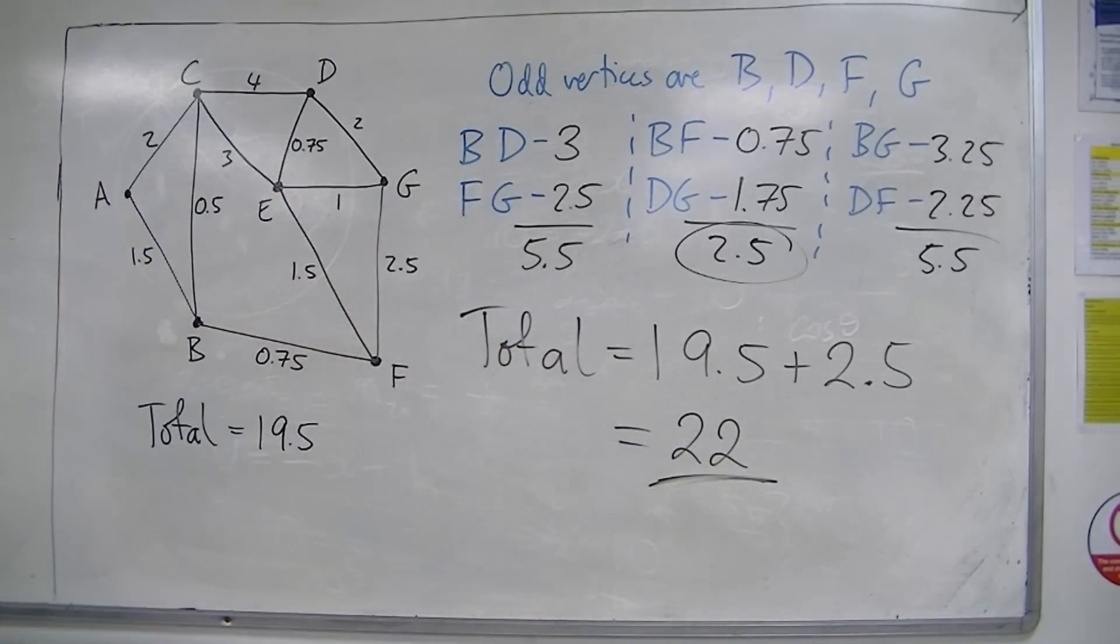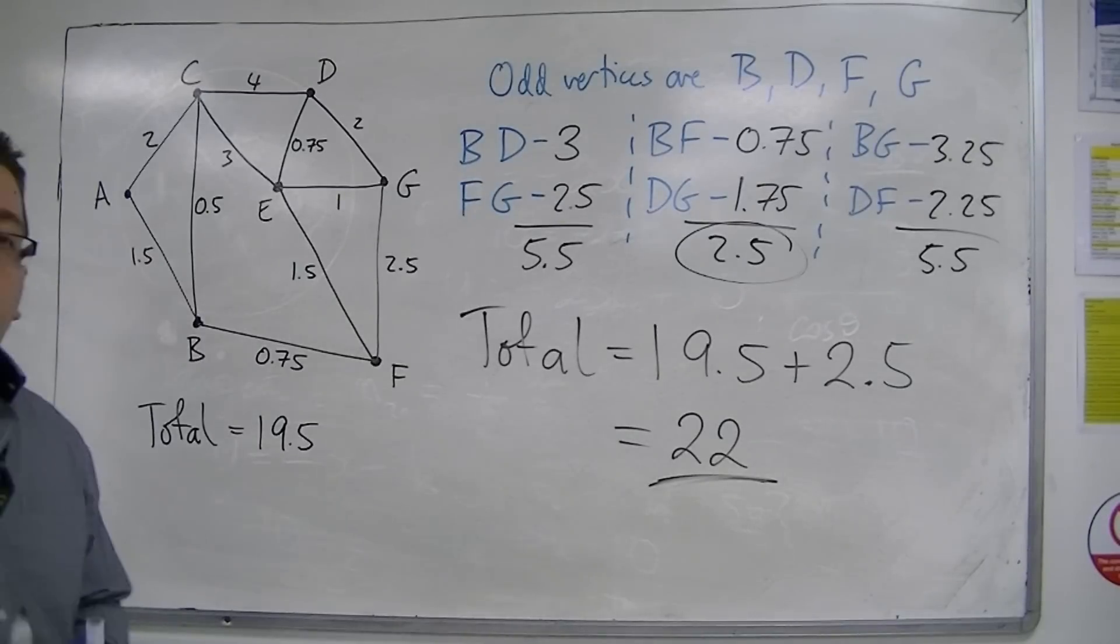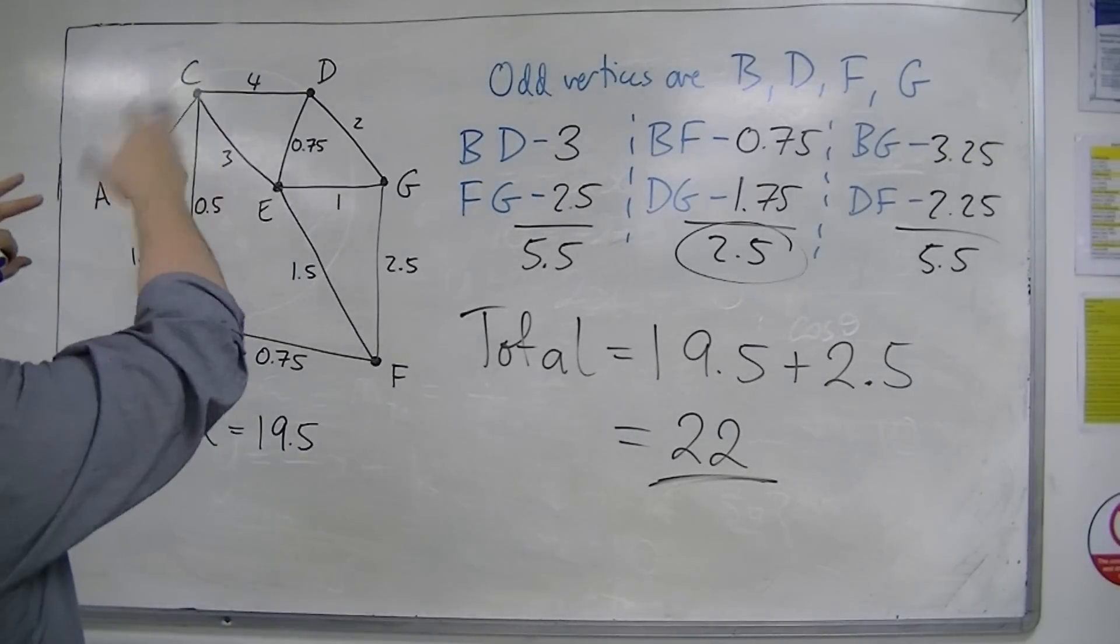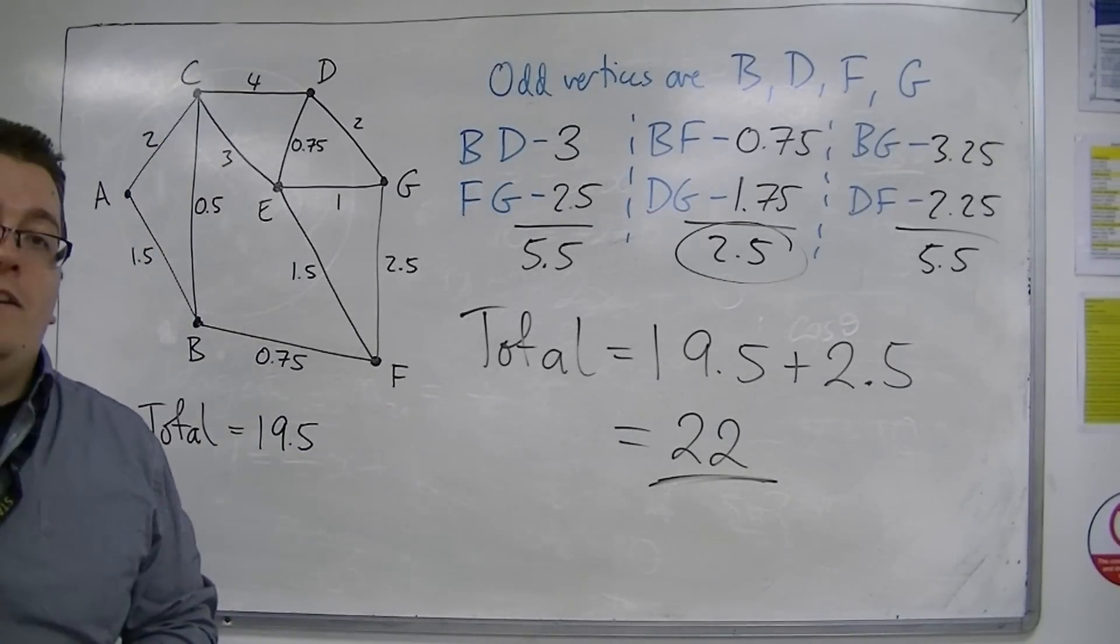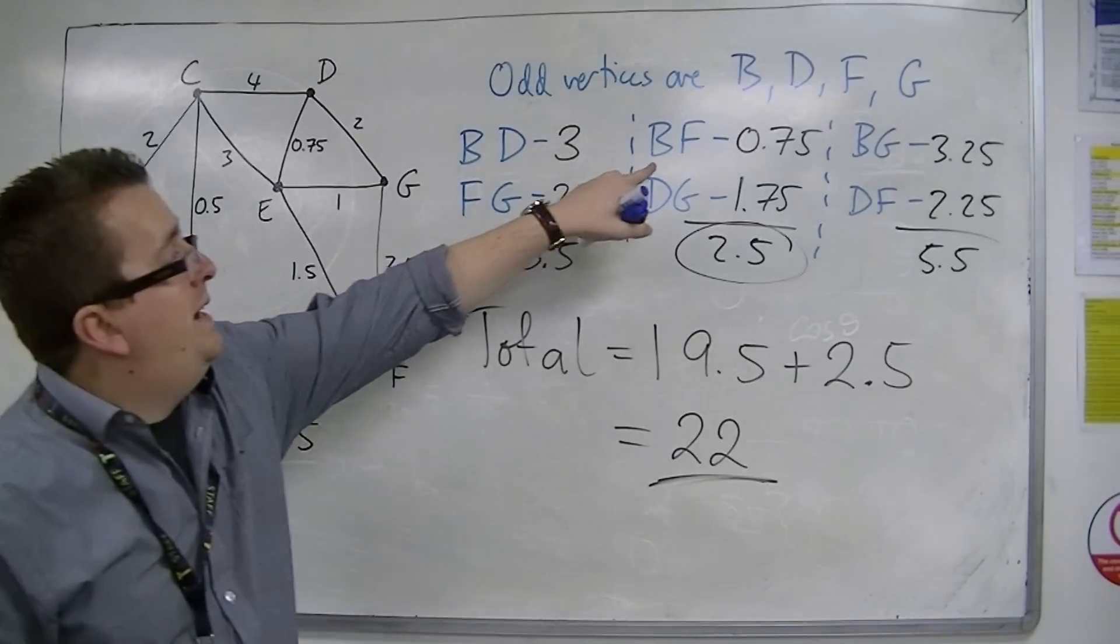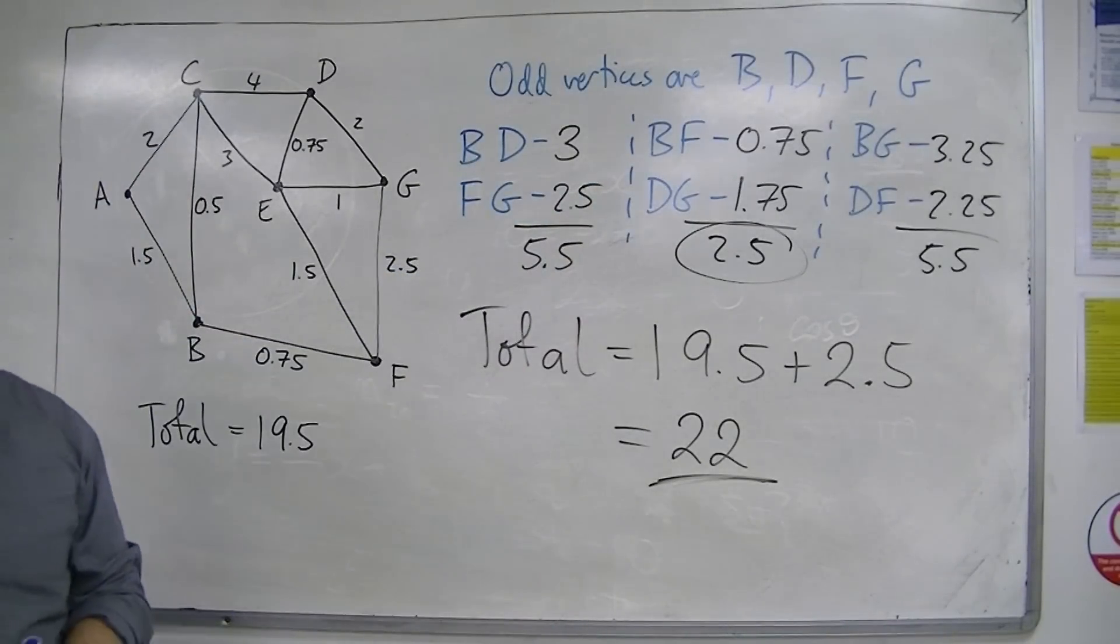OK, and that is the shortest distance that will get me around all of the edges and back to where I started, where I'm going to be repeating the routes B, F and D, G.